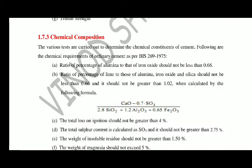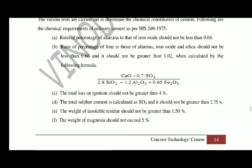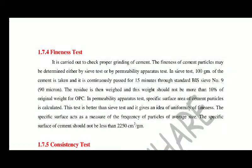The total loss on ignition should not be greater than 4 percent at the time of manufacturing of cement. The total sulfur content calculated as SO3 should not be greater than 2.75 percent. The weight of magnesia should not exceed 5 percent. For the fineness test, take 100 grams of cement and sieve through sieve number 9 — the size of that sieve is 90 microns — for 15 minutes. After 15 minutes of shaking, the residue retained on that sieve should not be greater than 10 percent.